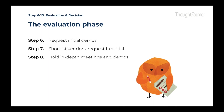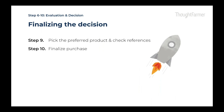Steps nine and ten: finalizing the decision. You're near the end of your evaluation phase. The best way to confirm is through references — asking good questions like: how long have you been using the product? Why did you choose this particular vendor? How was the start of the project? What's working really well? What are the areas of opportunity? And if you could do it all over again, would you buy from this vendor again? That's always a great question to ask.